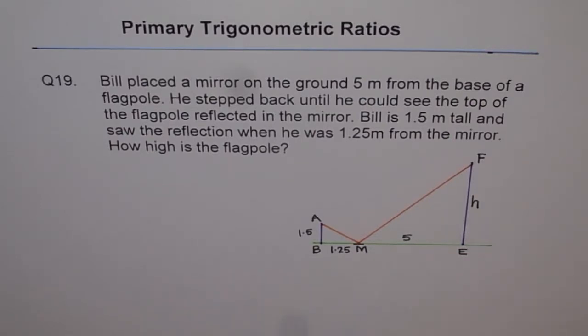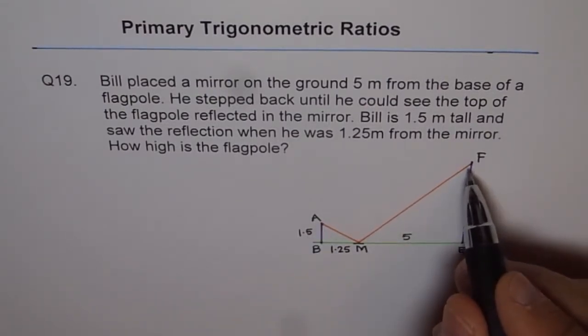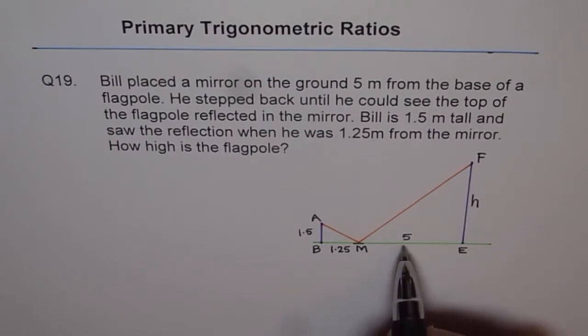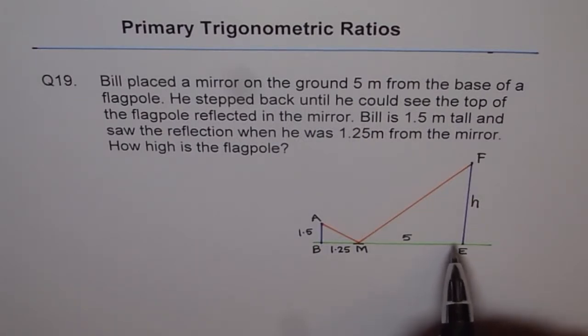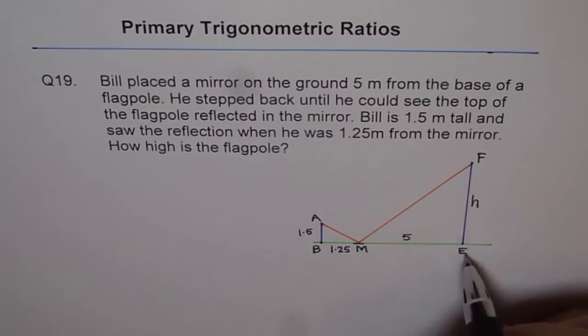So that's the sketch. Bill is standing 1.25 meters from the mirror, his height is 1.5 meters, and at this position he can see the top of the flag. The mirror is 5 meters from the base of the flag. We need to find how high the flag is. Let that height be h.